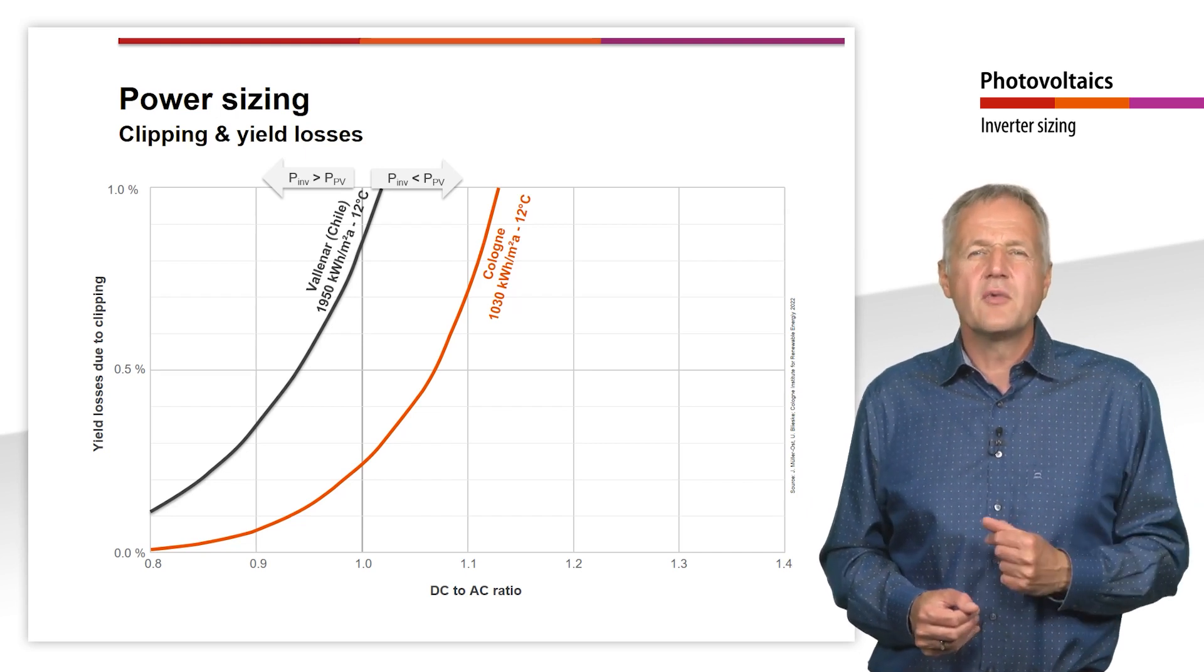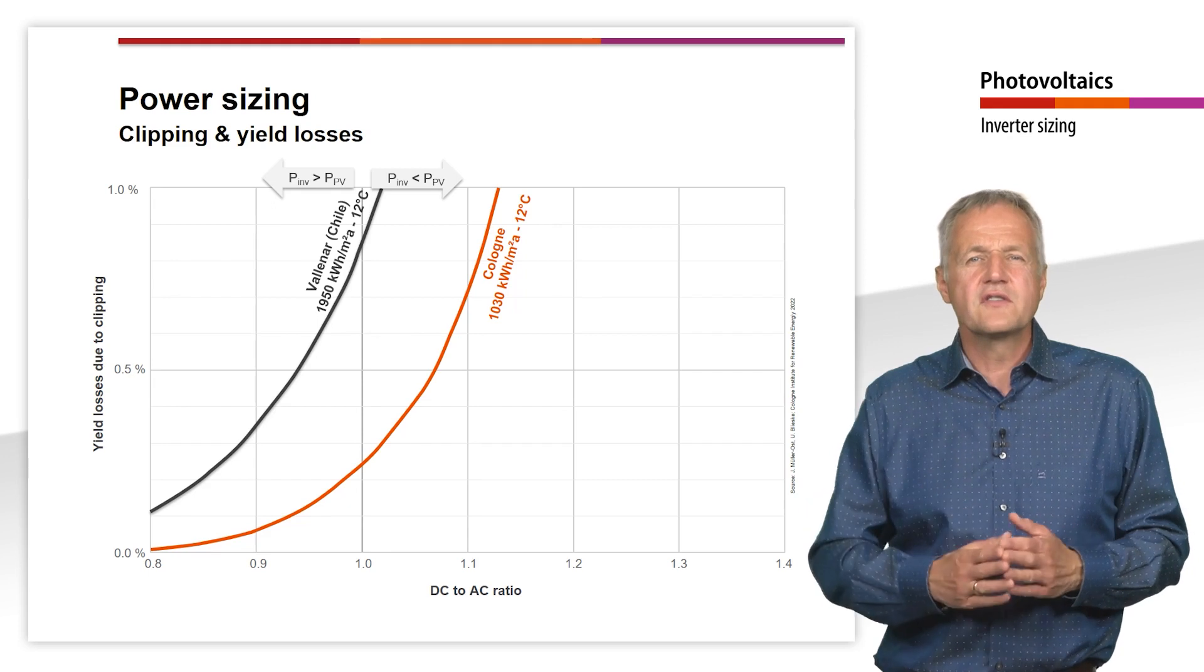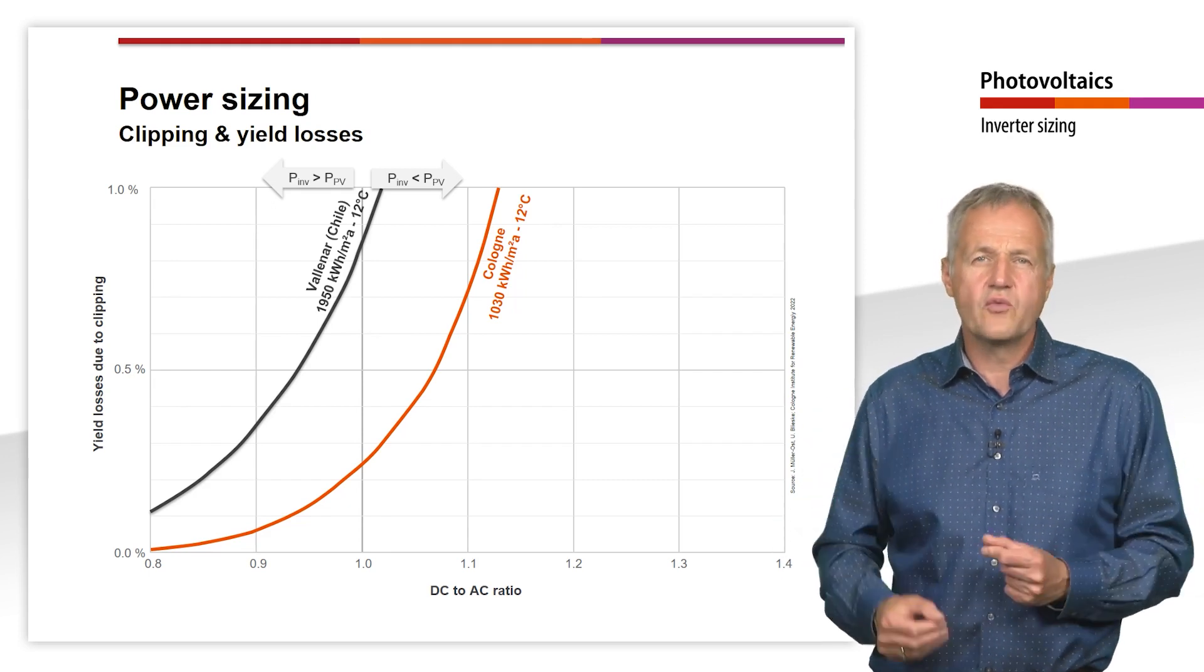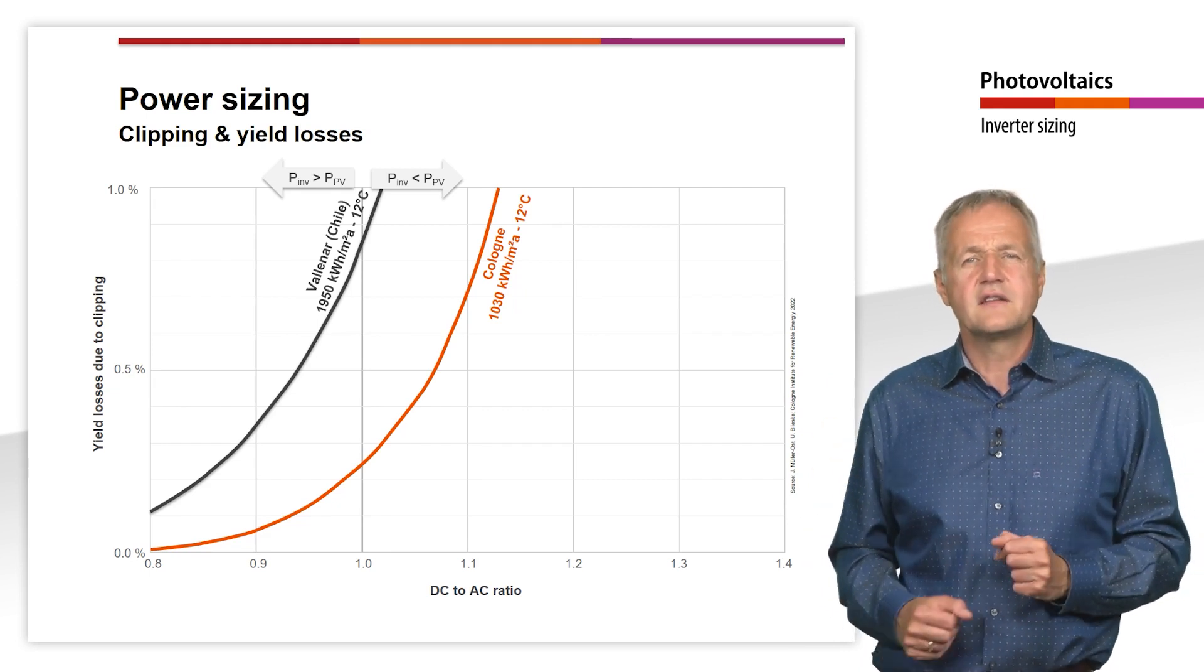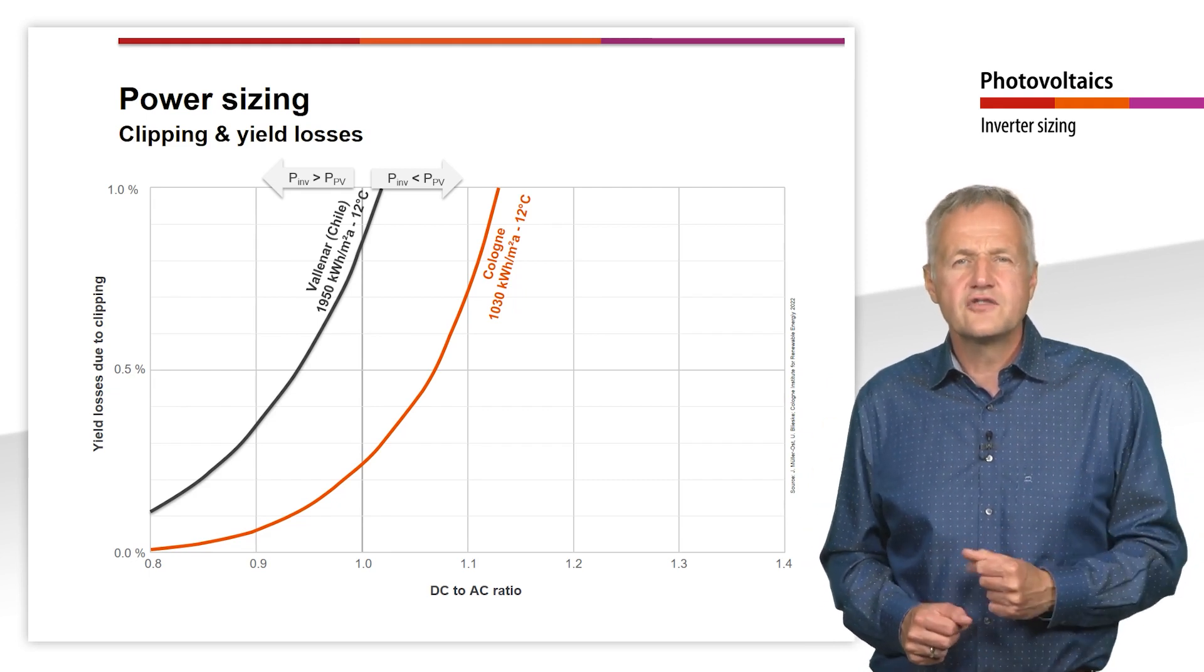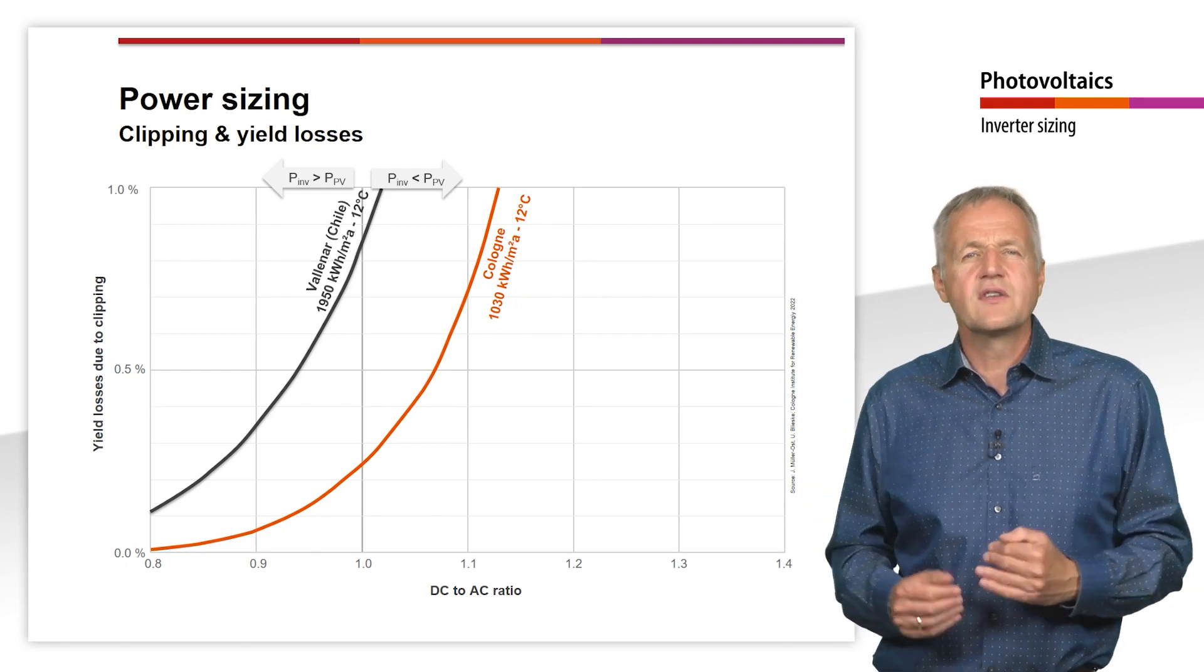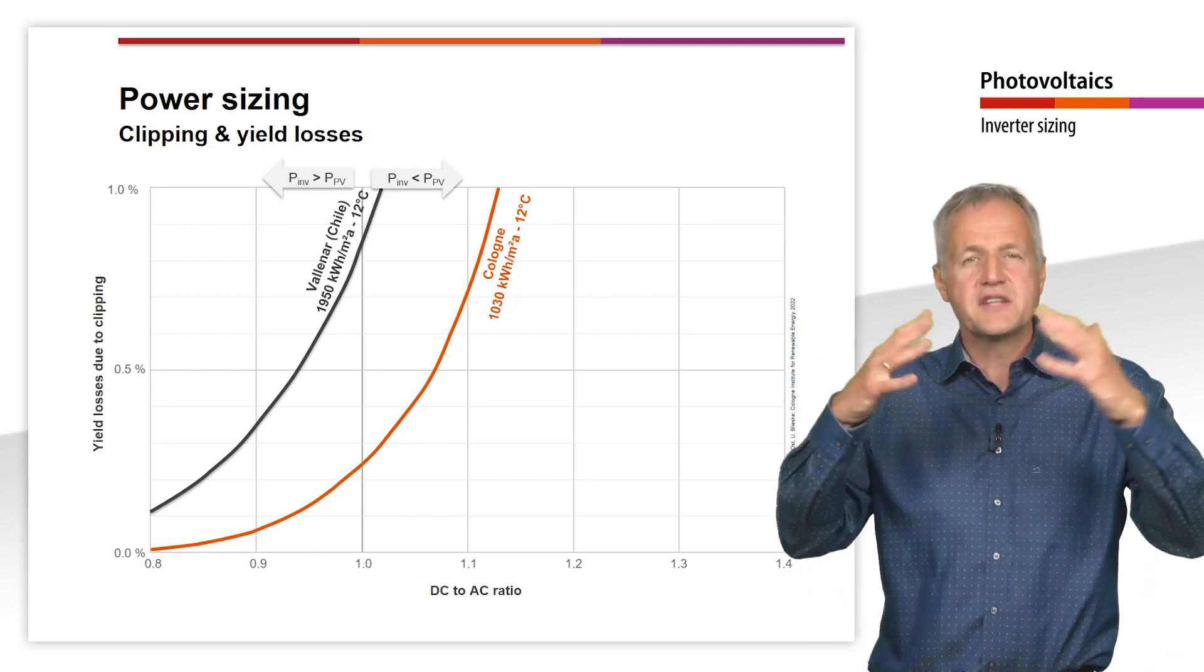With an optimal inclination of the modules, the design factor here should not exceed 1, so the inverter should not be undersized in any case. The situation is different for locations with high irradiation but also high temperatures.